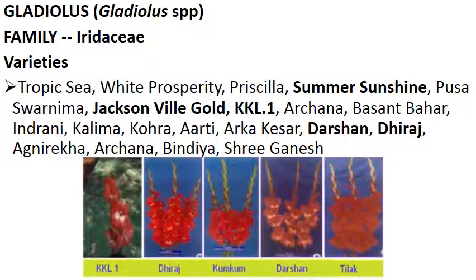The family of Gladiolus is Iridaceae. Important plants of Iridaceae you should know include: Iris, Crocus, Gladiolus, and blue-eyed grasses. There are many varieties of Gladiolus — the examiner's choice varieties, highlighted in bold, are: Summer Sunshine, Jacksonville Gold, KKL1, Darshan, Dirja, Archana, and Shri Ganesh. You should remember these varieties. The pictures in this slide show flowers of different Gladiolus varieties.